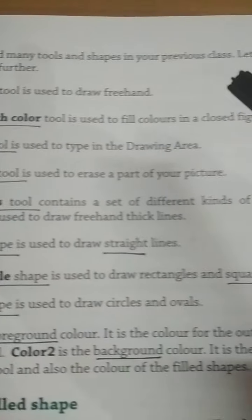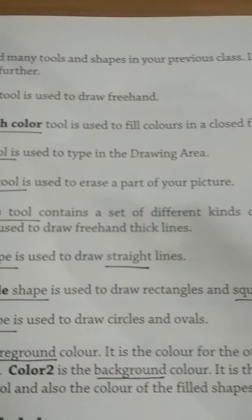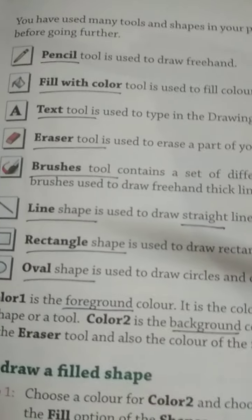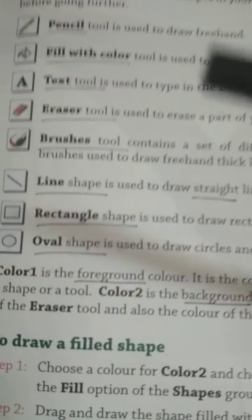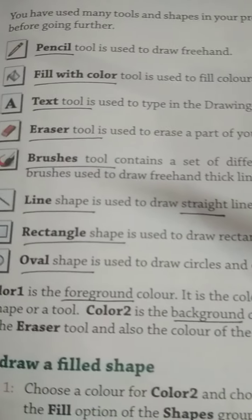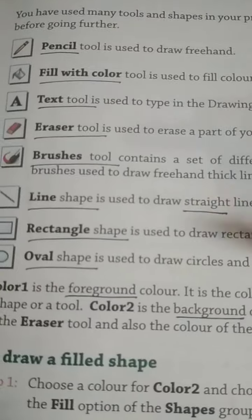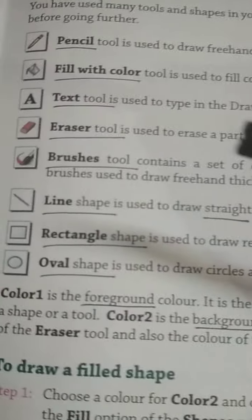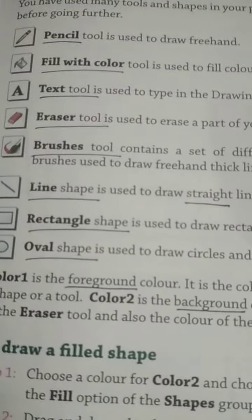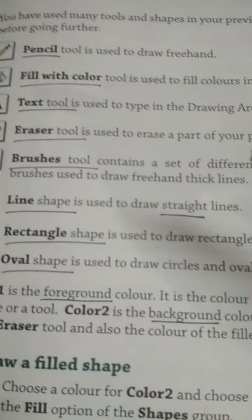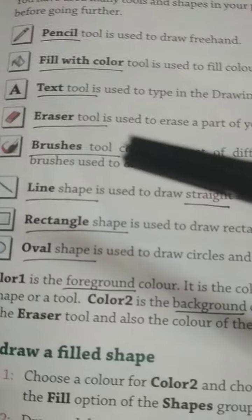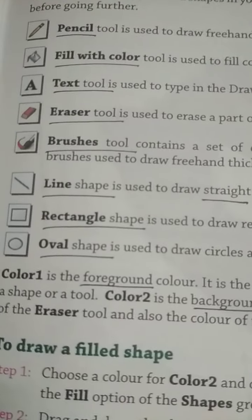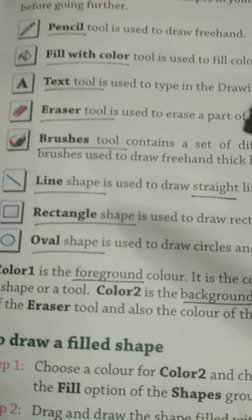You have used many tools and shapes in your previous class. Let us first revise them before going further. Pencil tool is used to draw freehand — pencil tool se hum freehand drawing karte hain computer pe. Fill with color is used to fill color in the closed figure — jab bhi aap koi closed drawing banate hain, uske andar hum color fill karte hain. Text tool is used to type in the drawing area — drawing area mein agar aapko type karna hai, toh text tool use karein.